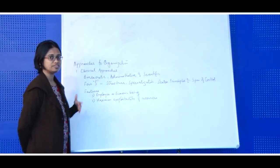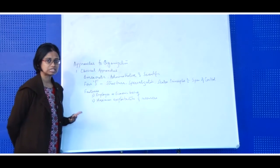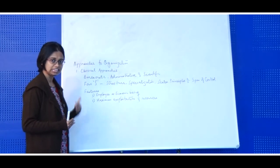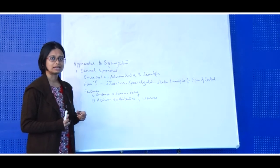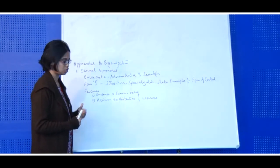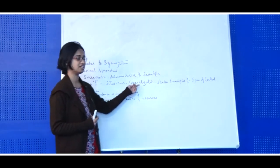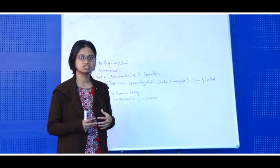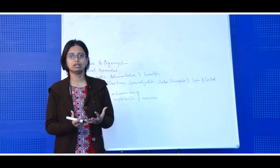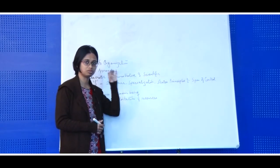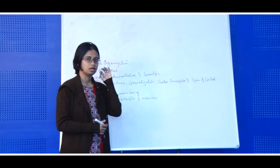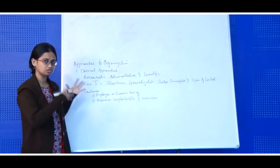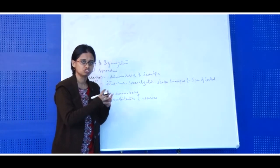The second is specialization. Classical approaches always emphasize the specialization of work that comes after the division of labor. First, work is divided into different parts, and then those divided parts are specialized by professionals. So classical approaches always emphasize specialization of a particular work, instead of encouraging a person to handle the whole project. They only focus on a particular part of the entire project. Next is scalar principles and span of control.